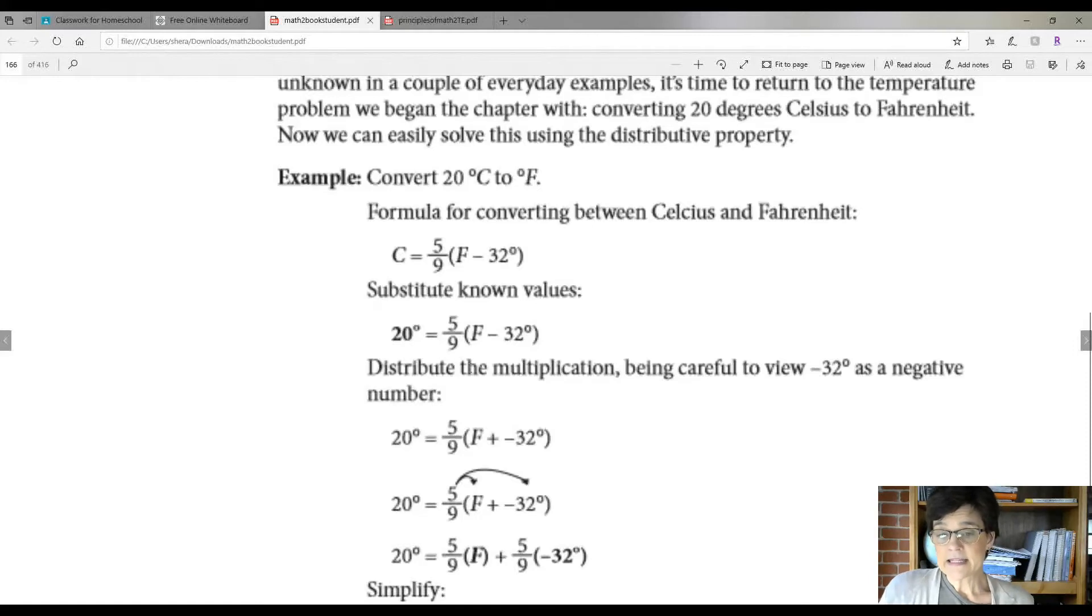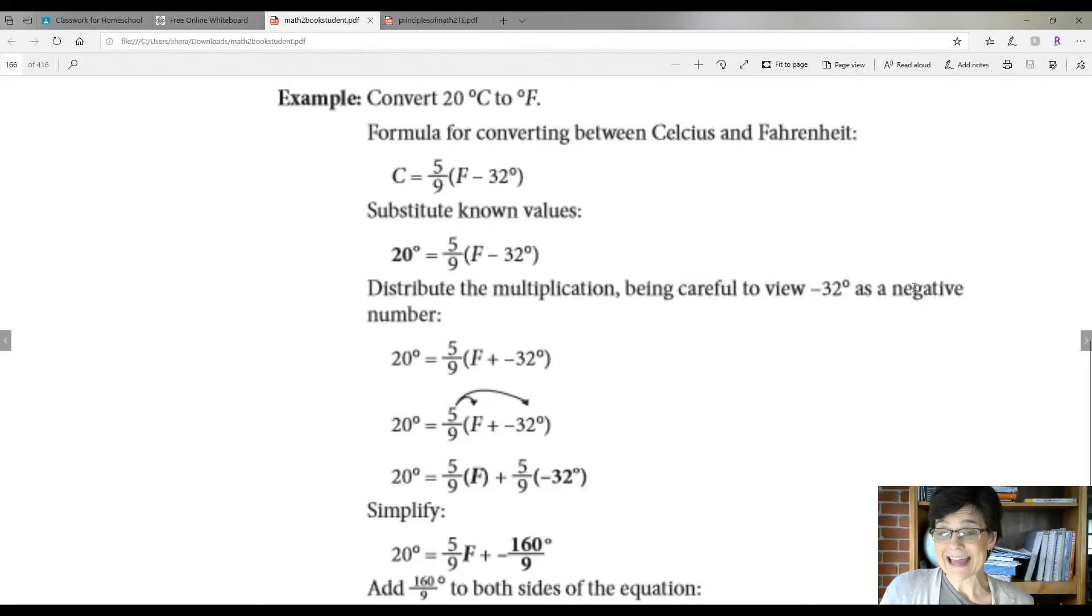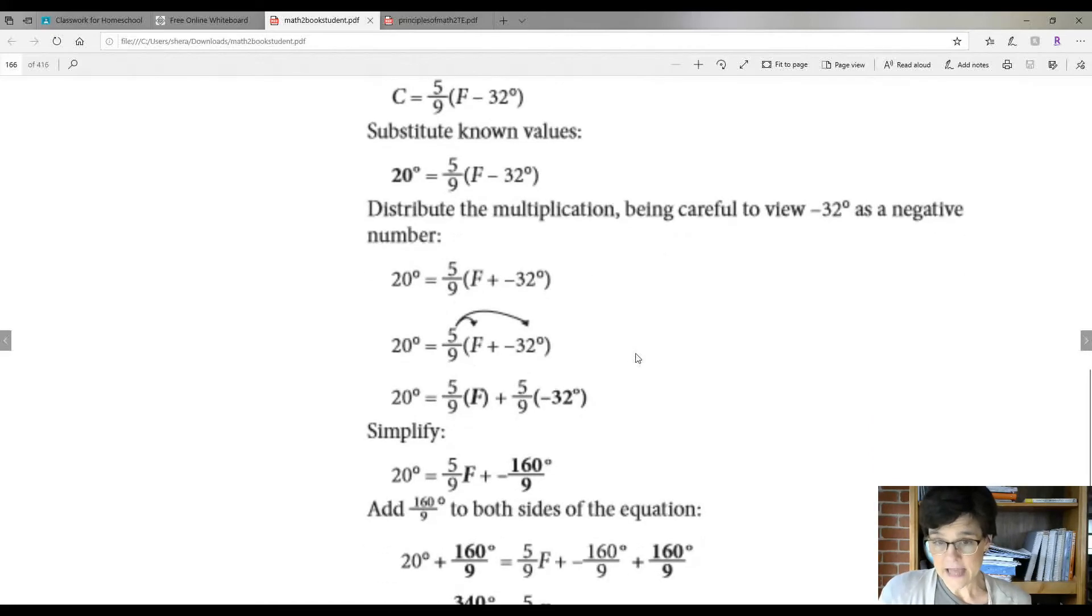Then it says distribute the multiplication, being careful to view negative 32 as a negative number. Remember you have to change this to plus the negative number because that's what it is, actually. Now we did the distributive property.